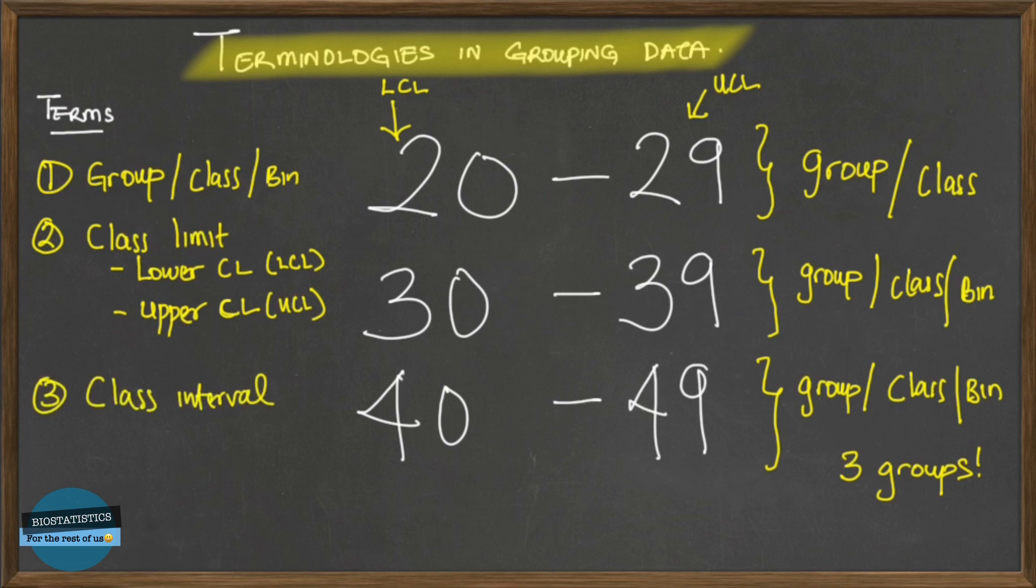The next thing we'll be talking about is the class interval. When you talk about class interval, class interval is the difference between the lower class limit and the upper class limit. So the class interval for the 40 to 49 group is just 49 minus 40 and you have 9. So 9 is the class interval.